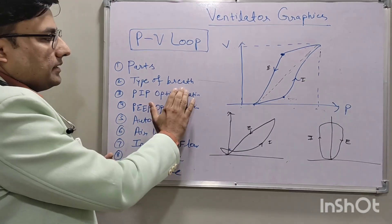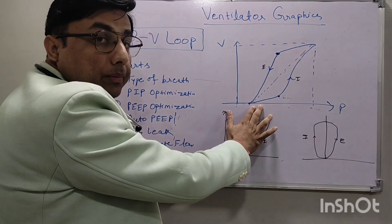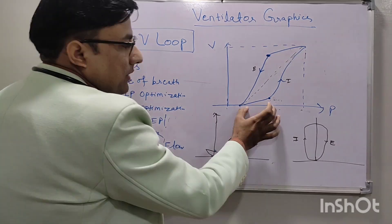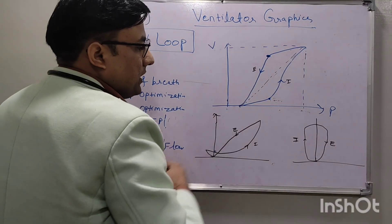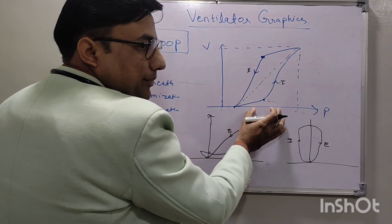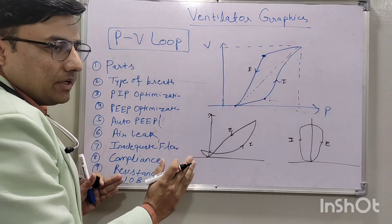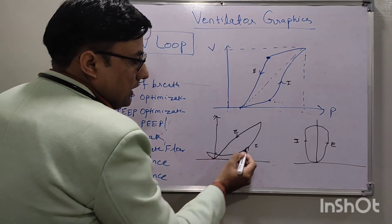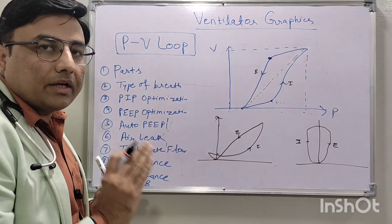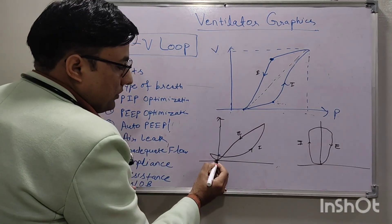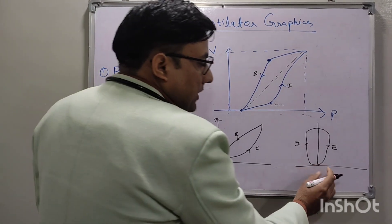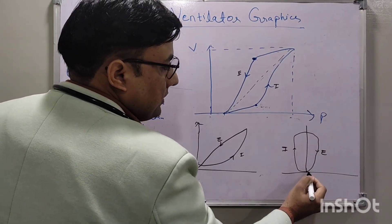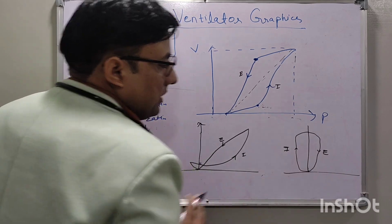In this graphic we can also see the type of breath. In a mandatory breath, the baby is not triggering — there is a positive deflection during inspiration and expiration. If there is a triggered breath — triggered by the baby — there will be a negative deflection first (clockwise), then it goes anticlockwise. In a spontaneous breath, during expiration it goes negative then positive, giving a clockwise appearance.